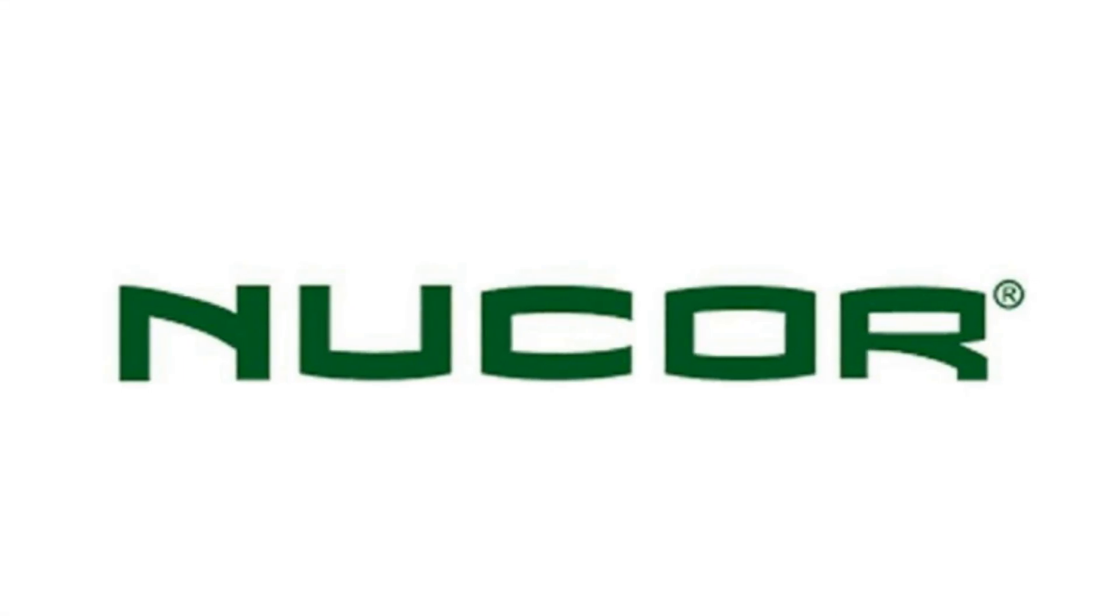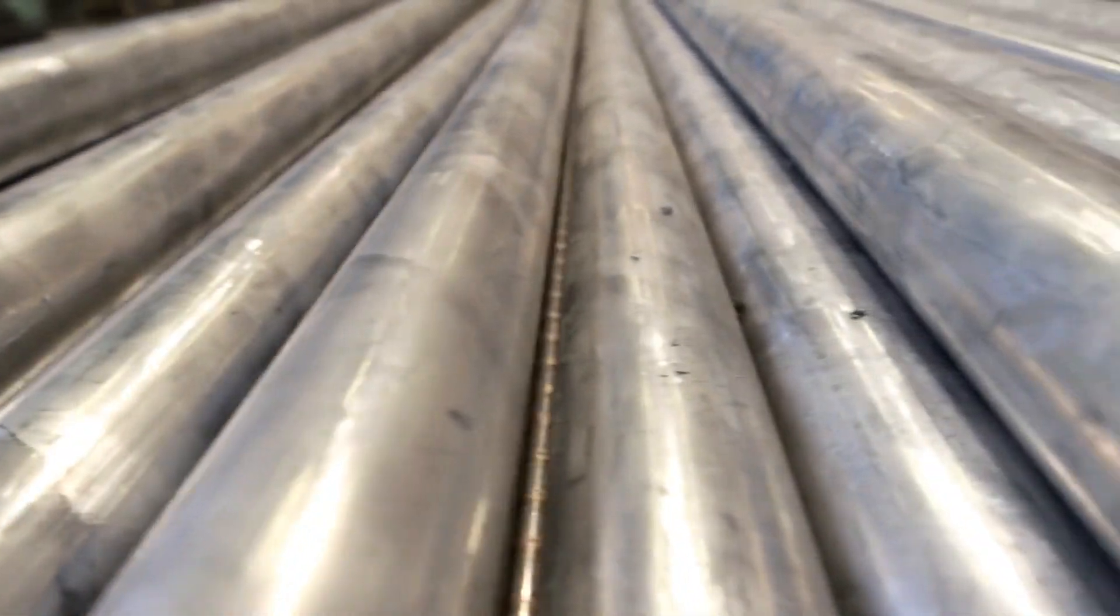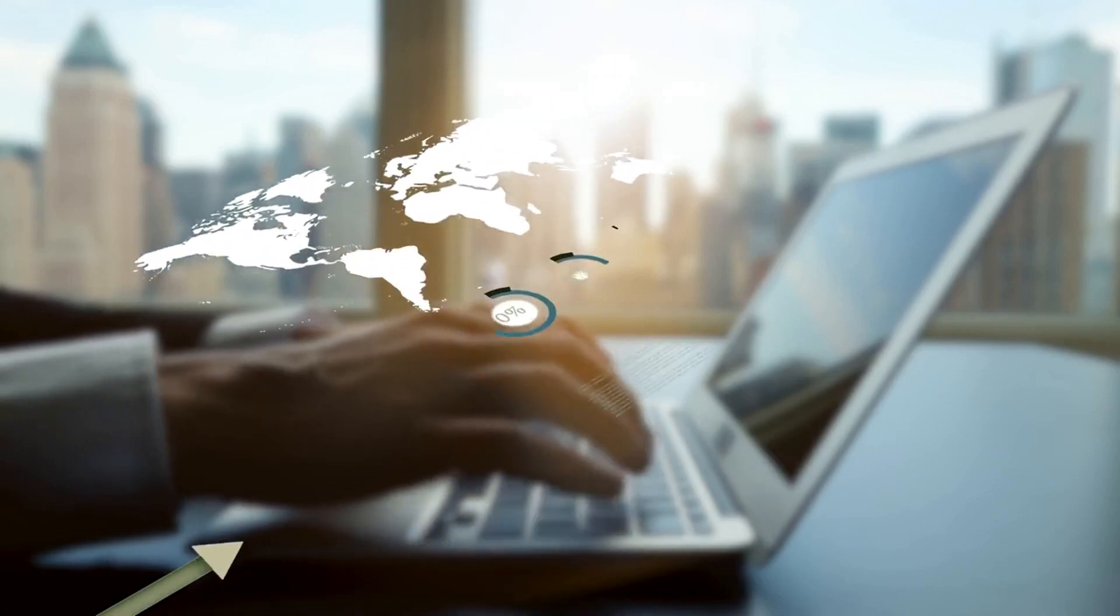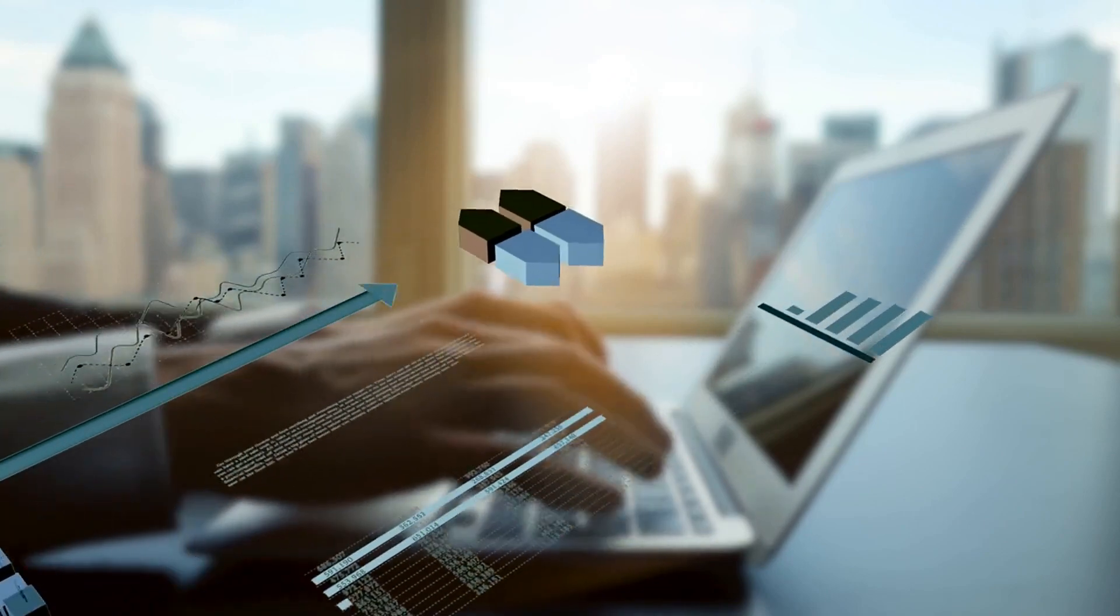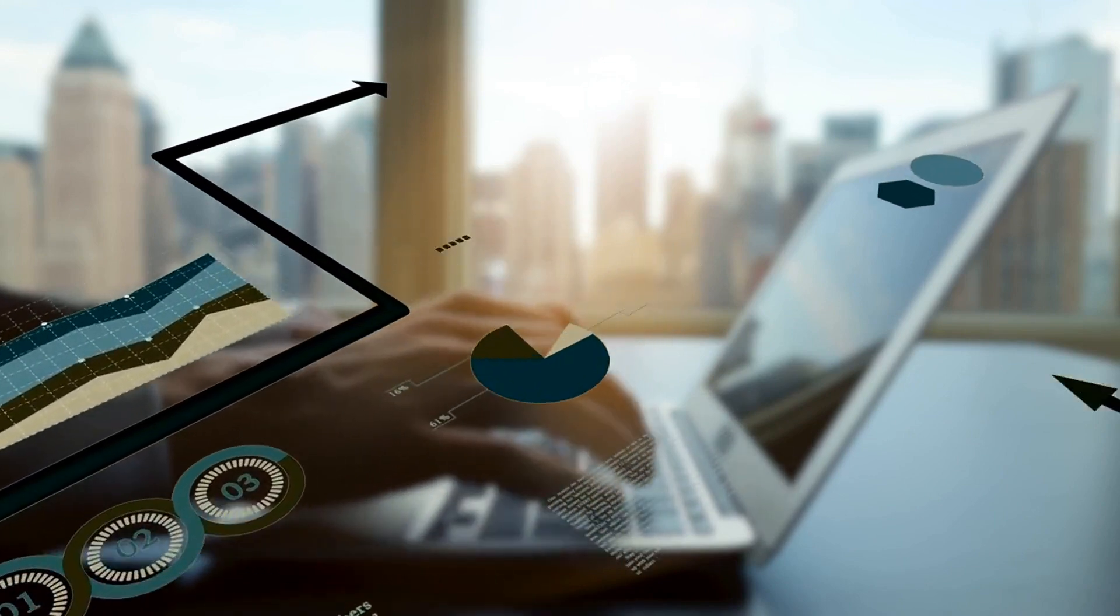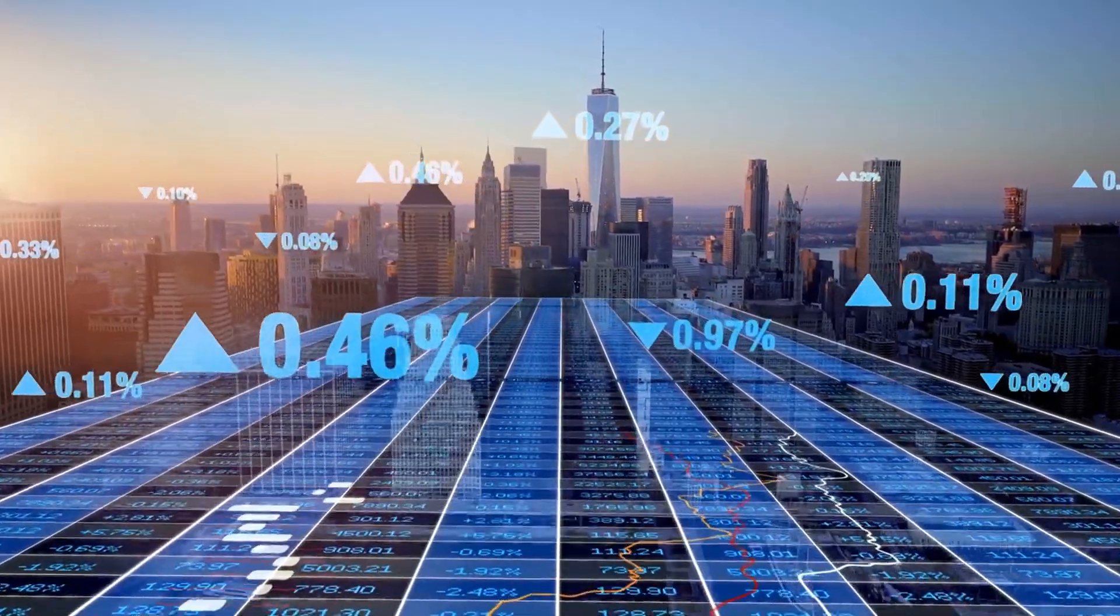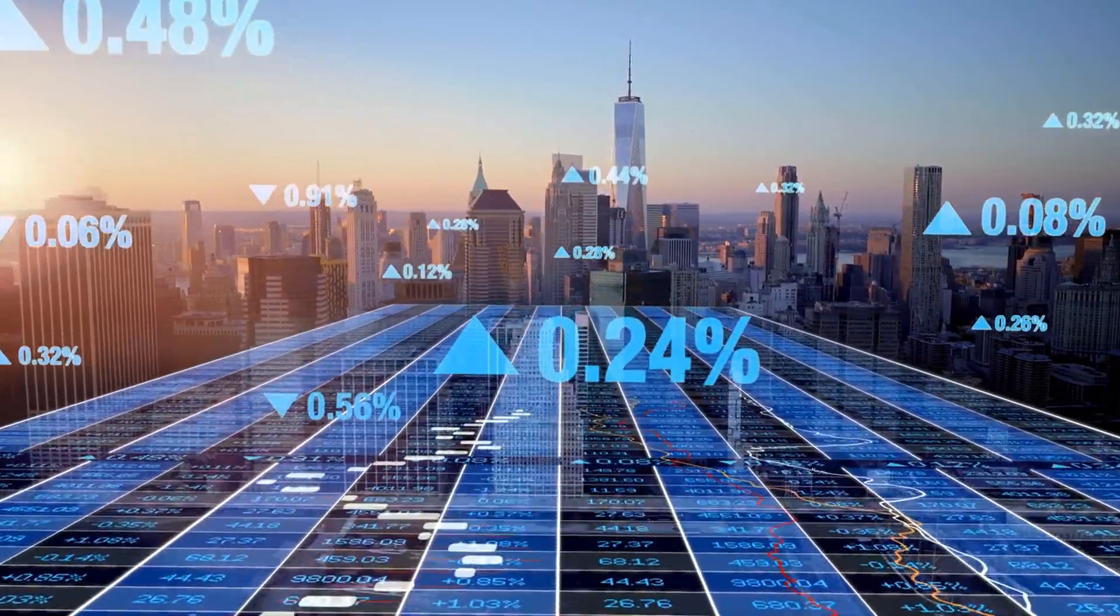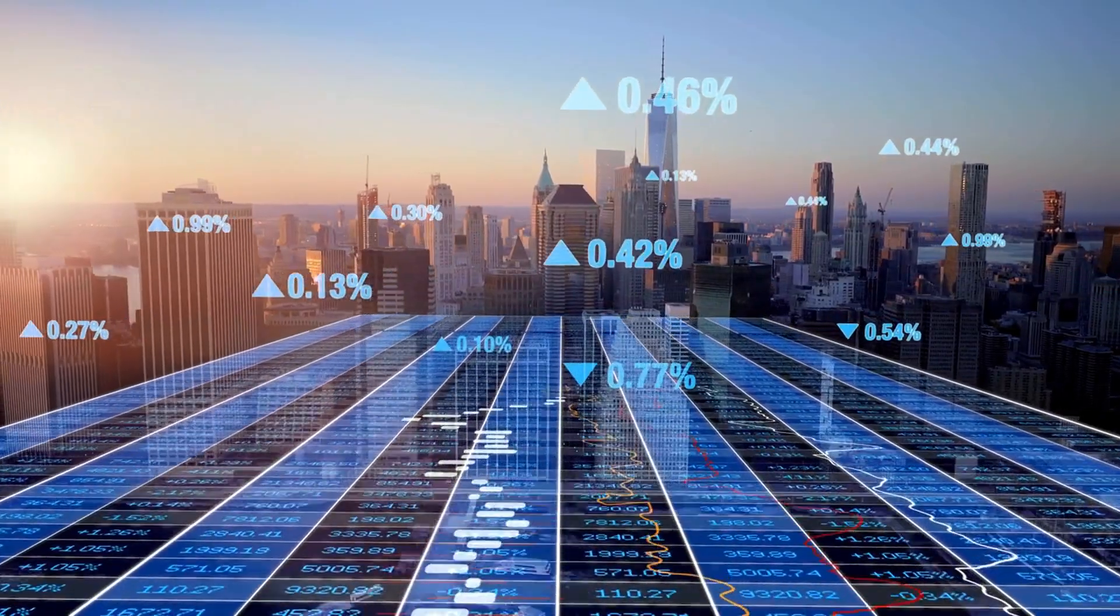Number 14. Nucor, ticker NUE. Nucor Corporation is an American producer of steel and related products based in Charlotte, North Carolina. Nucor has increased its annual dividend for 49 consecutive years. Its 10-year annualized total return is 13.23% through October 2022, 3.36 basis points higher than the entire US market. It currently yields 1.7%. In September 2022 the company declared a quarterly cash dividend of $0.50 to be paid to shareholders on November 10. It's the company's 198th consecutive quarterly cash dividend. That sounds even more impressive than 49 years.